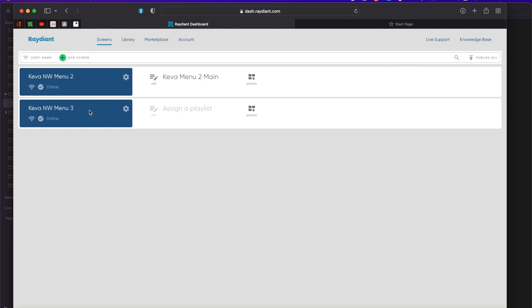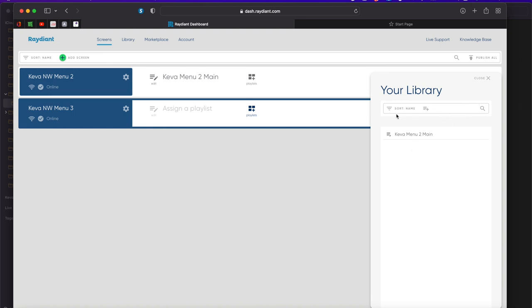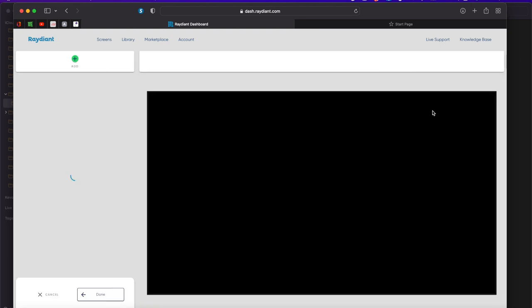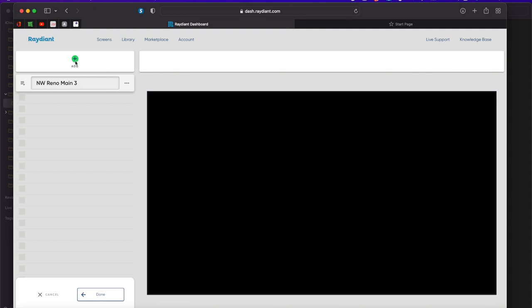The last step here is really simple—to assign a playlist. So what we're going to do is add a new one and we'll call this Northwest Reno Main 3 because it's the third menu. Then what we're going to do is add Menu 3.